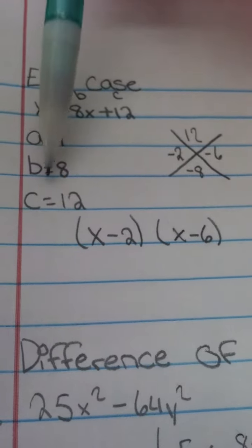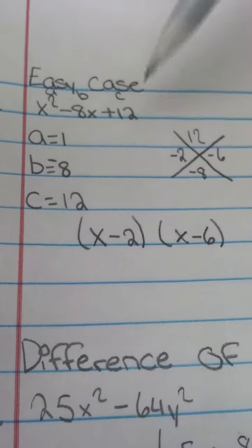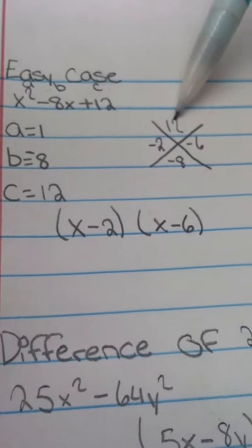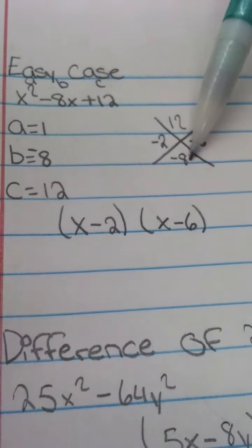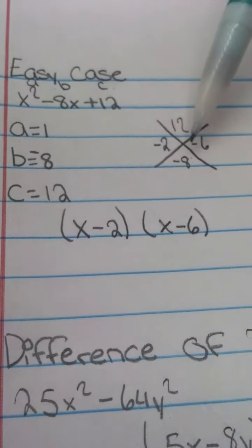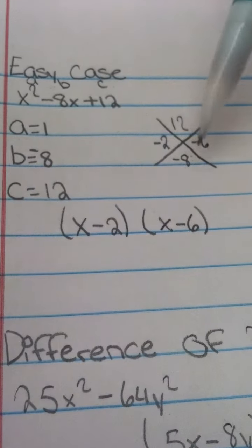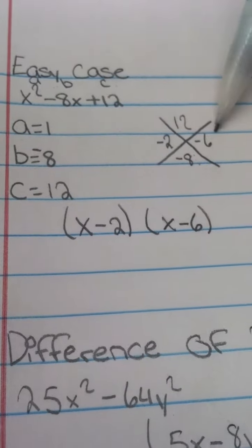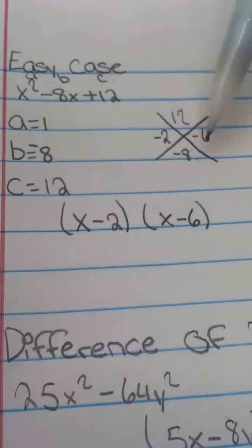And so as you see, I have it right here. And then you do your little diamond method. So you will put the c on top, and so that will be 12, the b on the bottom. So it will be negative 8, and you will try to find out what can multiply to 12 but add to negative 8. And so that's how I got negative 2 and negative 6. It will give you positive 12 and negative 8.